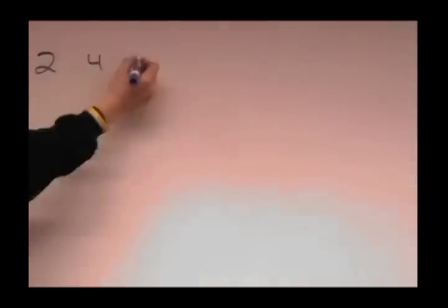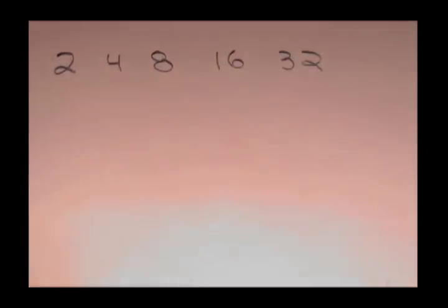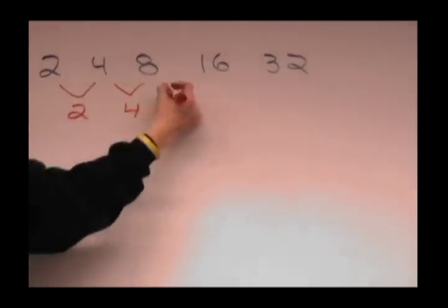Not every number pattern has a pattern of common differences. In this case, 2, 4, 8, 16, and 32, when you subtract between them, you find out that the pattern repeats itself. In the second row, the numbers don't get any closer together.